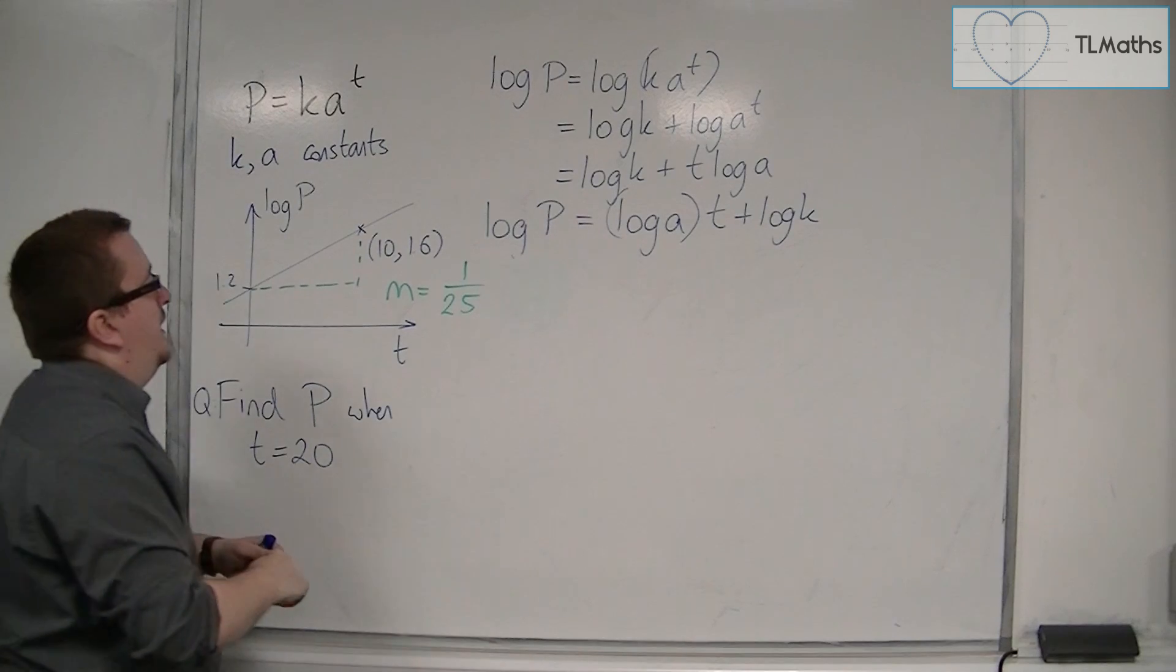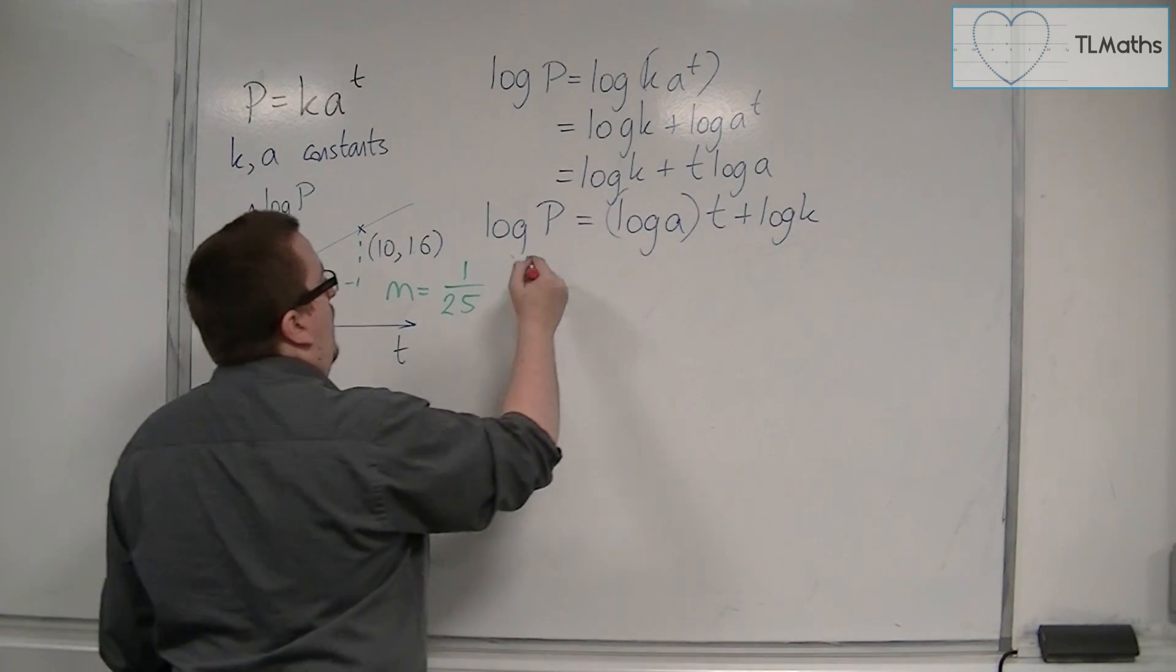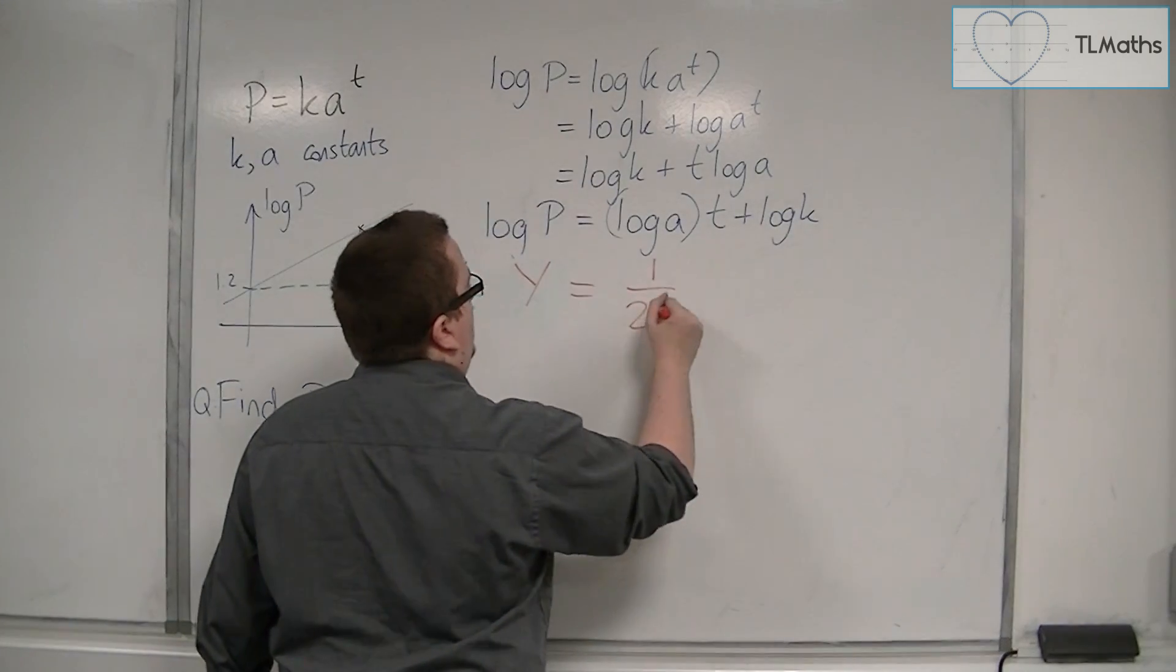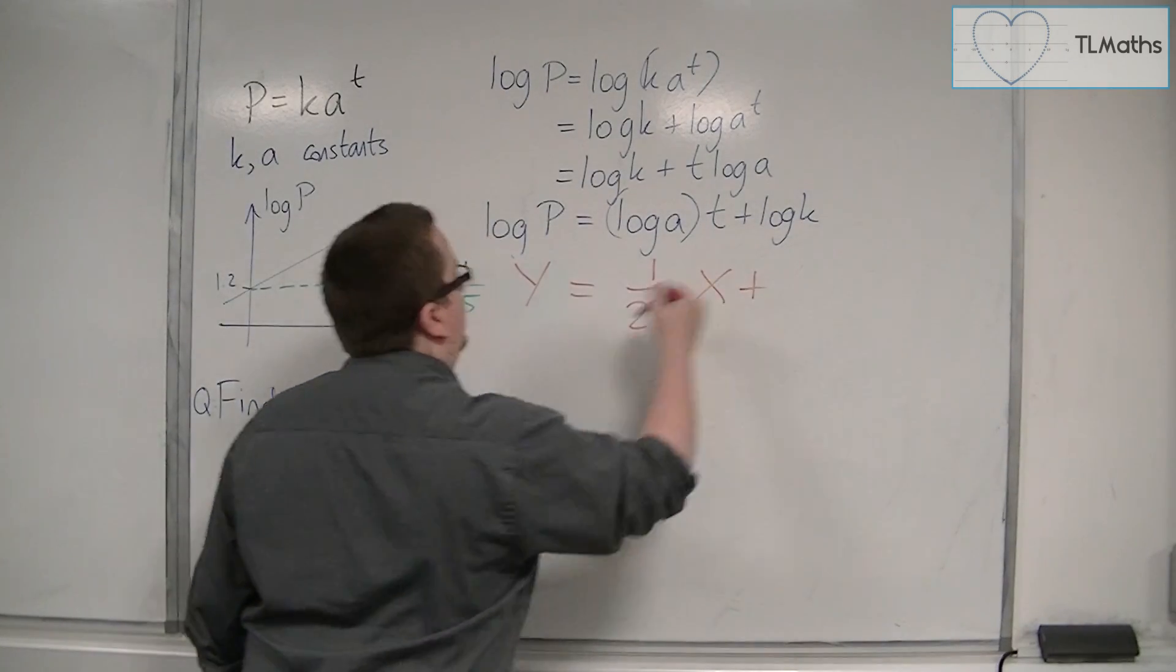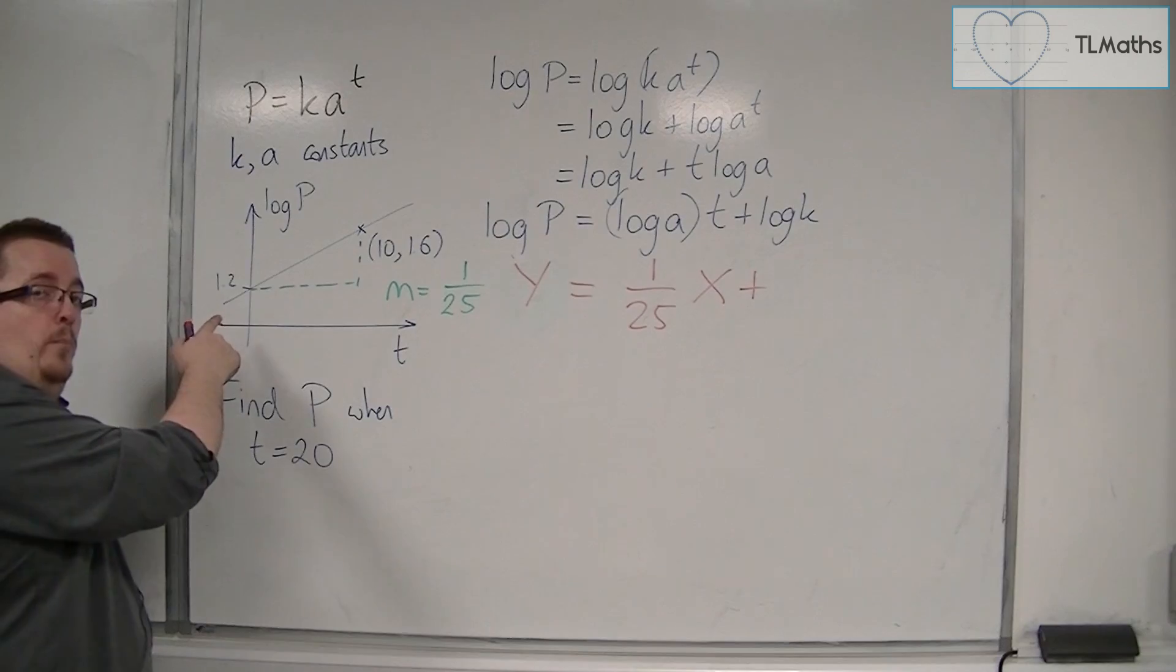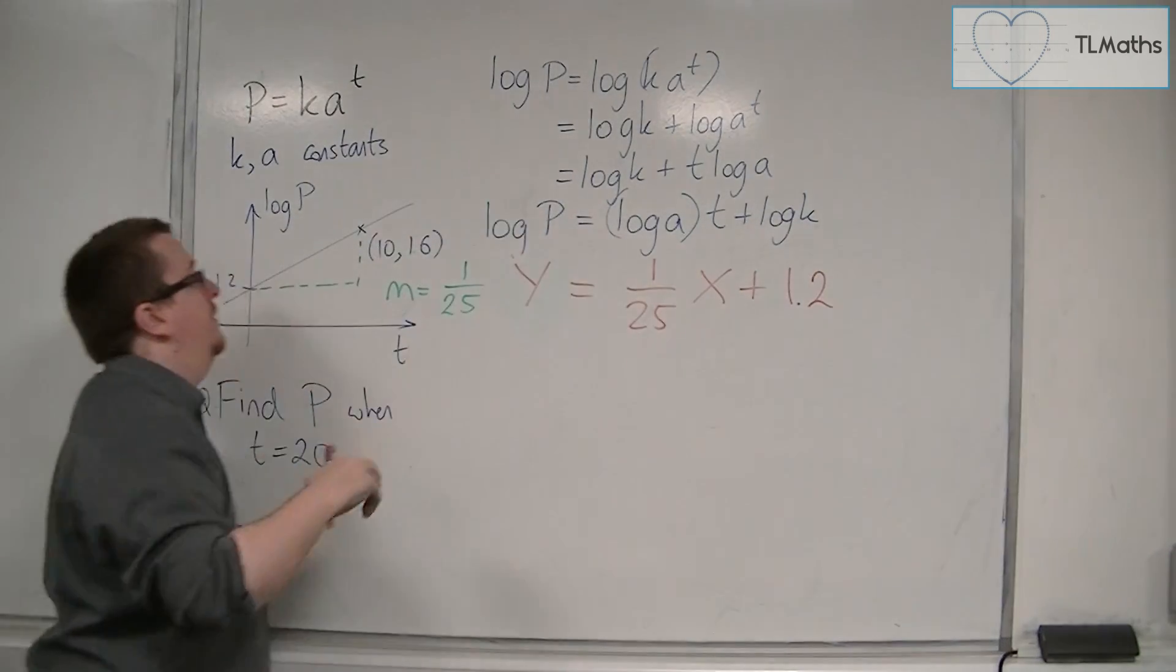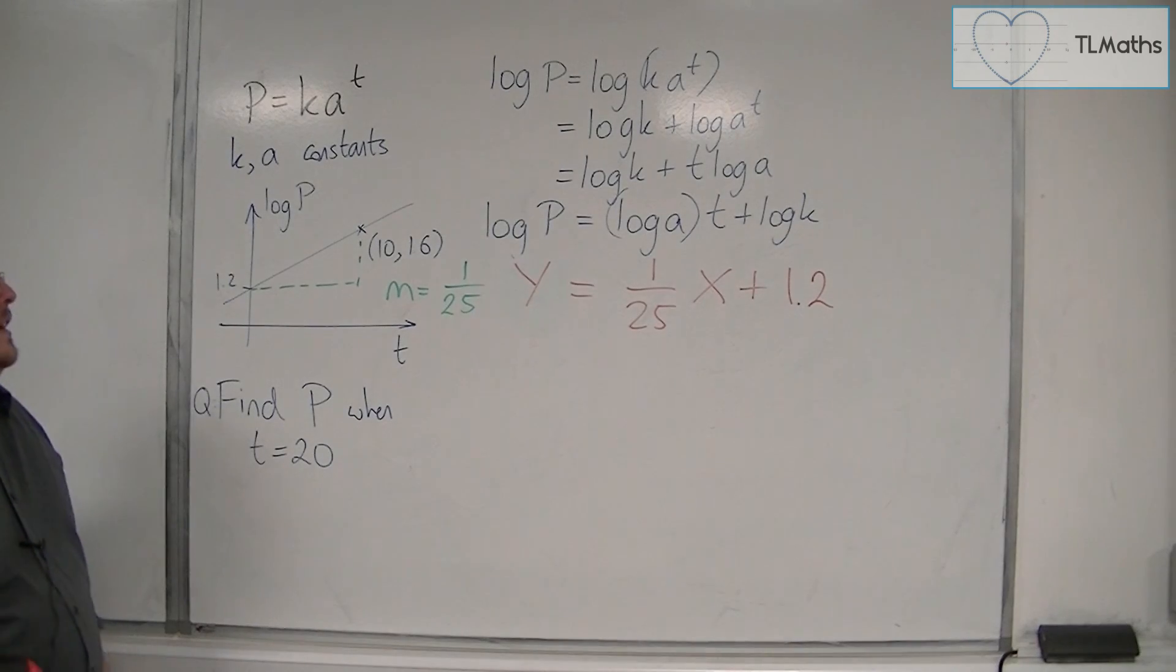So, that means that y is equal to m, x, plus c, which is the 1.2, where it's crossing the y-axis, or the log P axis in this case.